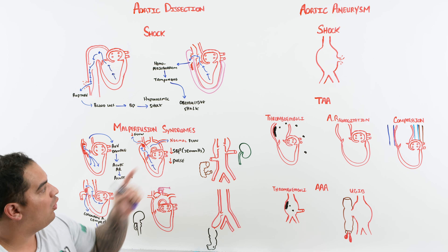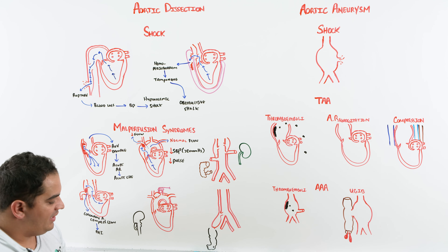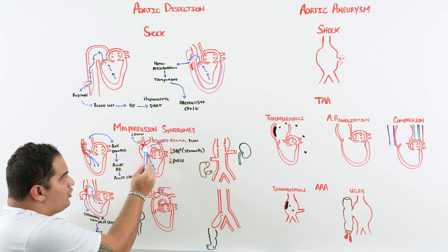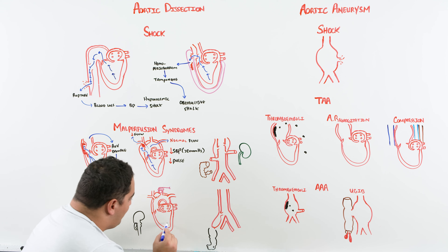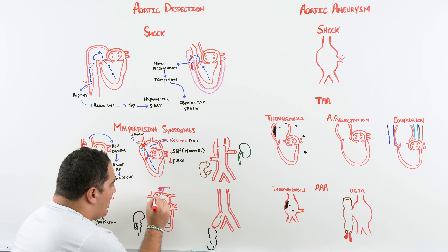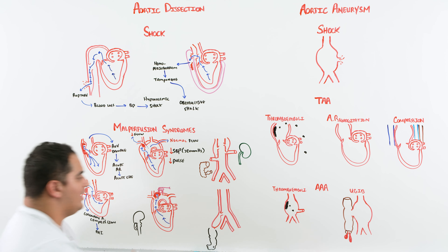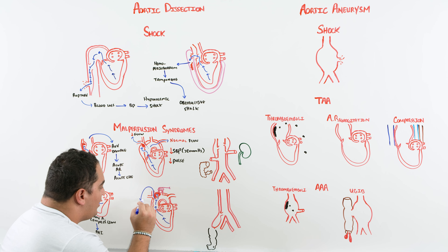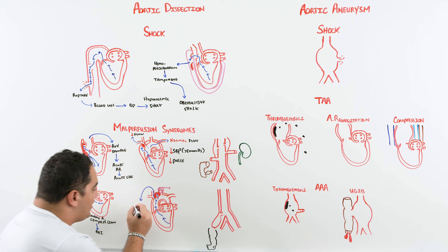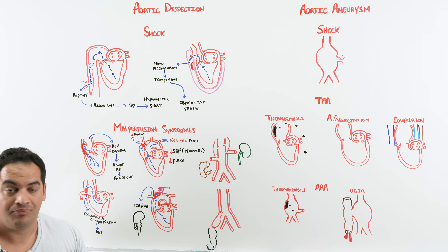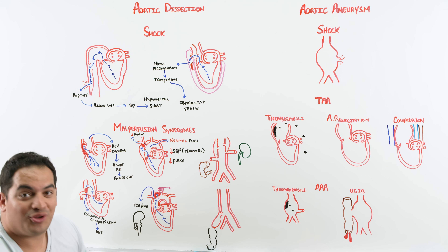Noticing asymmetric blood pressures and asymmetrically decreased pulses in a patient with ripping, tearing chest pain is classic for aortic dissection — don't forget this. Moving further up, if blood compresses the common carotid arteries, you reduce blood flow to the cerebrum, potentially leading to a TIA or worst-case scenario, a CVA.